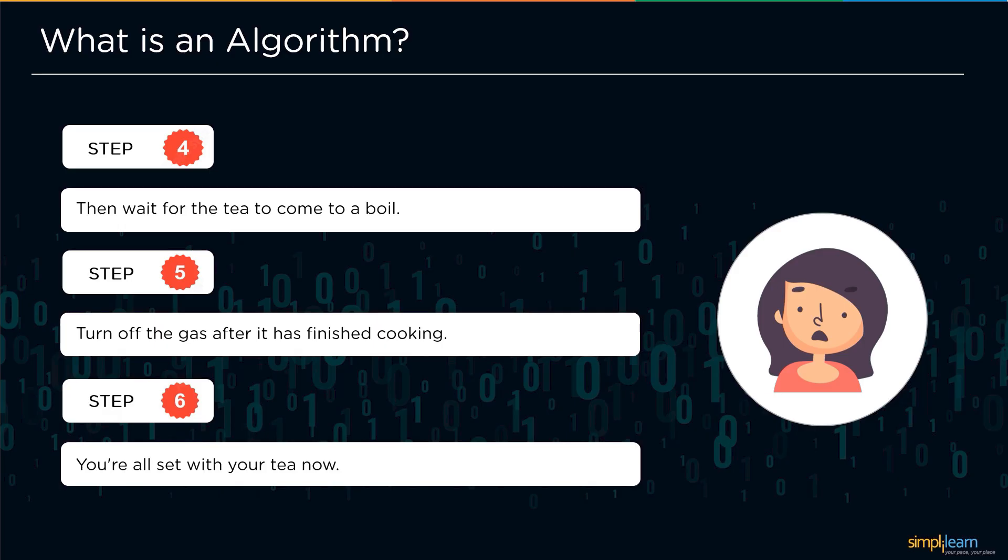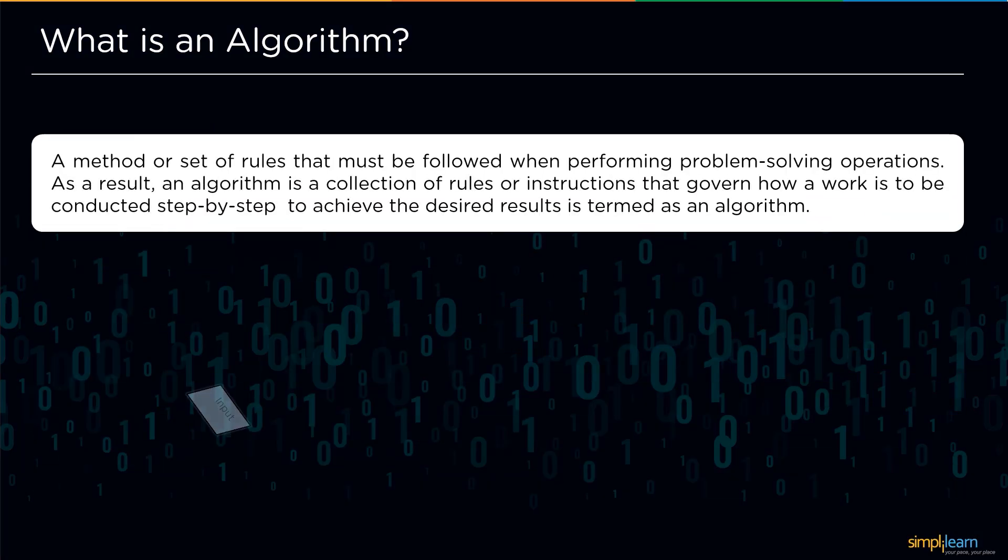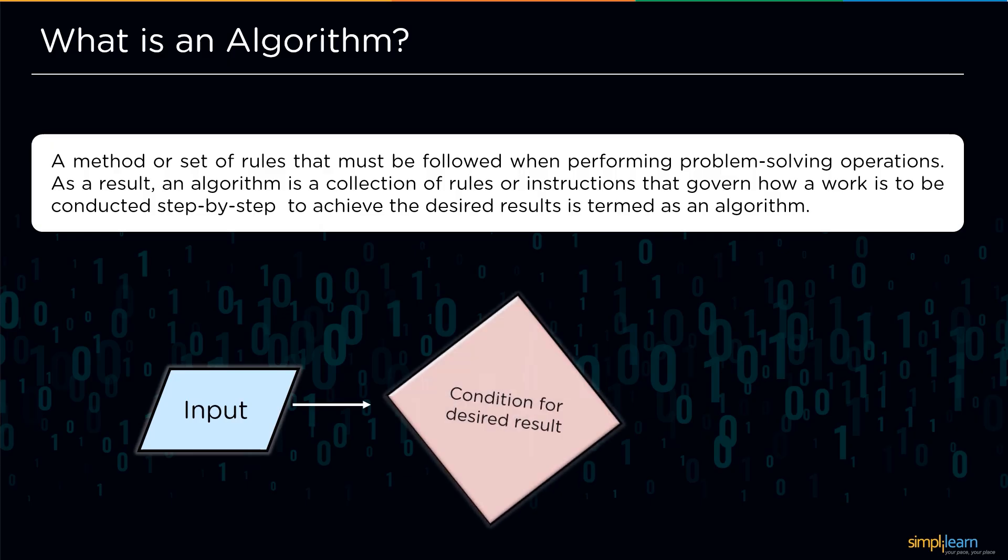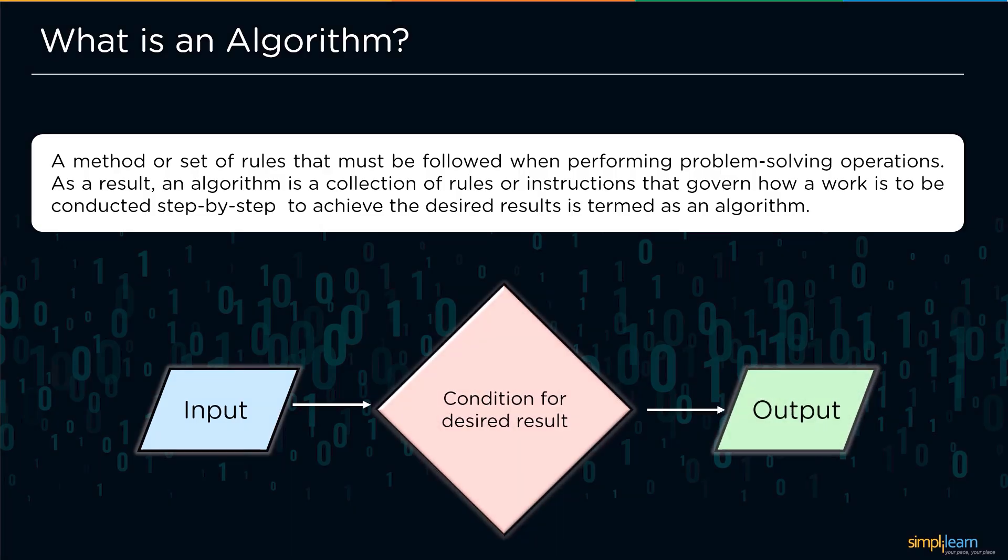So in computer science, an algorithm is a method or set of rules that we must be following to perform some specific calculations or other problem-solving operations. As a result, an algorithm is a collection of rules or instructions that govern how a work needs to be conducted step by step to achieve the desired results. To accomplish a task, we first provide some input and then follow a sequence of steps to acquire the required outcome. So that is the fundamental definition of an algorithm.